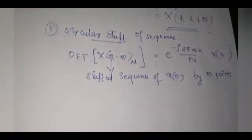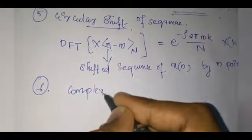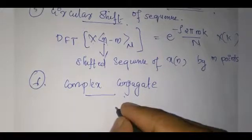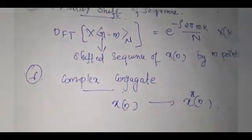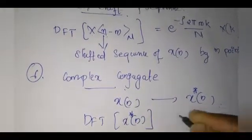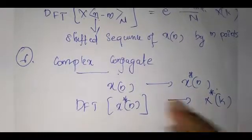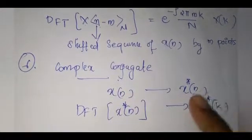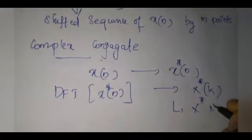The sixth property is the complex conjugate property. It states that if x(n) is your input, the DFT of x*(n) is X*(−k), which can be written as X*(N − k). Here X(k) is the DFT of the original input x(n), and X*(k) denotes the complex conjugate of that DFT.